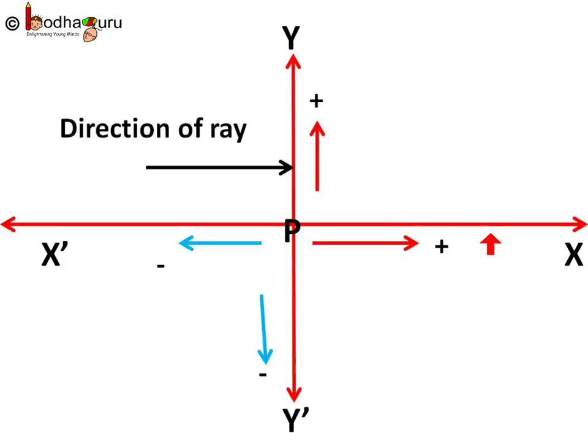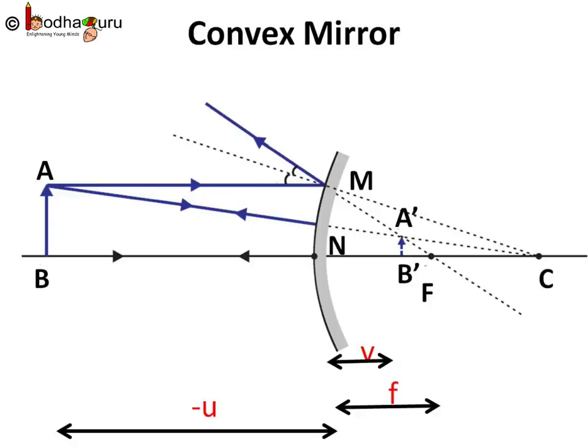And if any length is measured downward from the principal axis, it gets a negative sign. In case of convex mirrors, we always get a virtual upright image on the opposite side of the object.